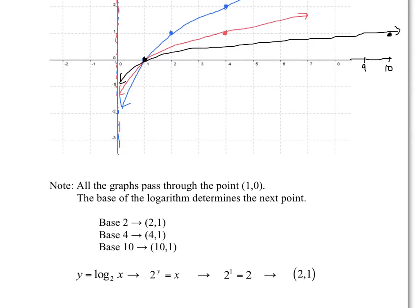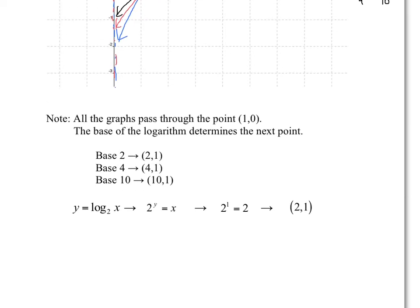A couple of details to mention. All the graphs pass by the point (1,0) — that's any log graph, as long as there are no transformations. And the base of the logarithm determines the next point: base 2 gives (2,1), base 4 gives (4,1), base 10 gives (10,1). The reason: if you put y equals log base 2 of x in exponential form, 2 to the power of y equals x. If you replace y with 1, you get x equals 2, giving the point (2,1).